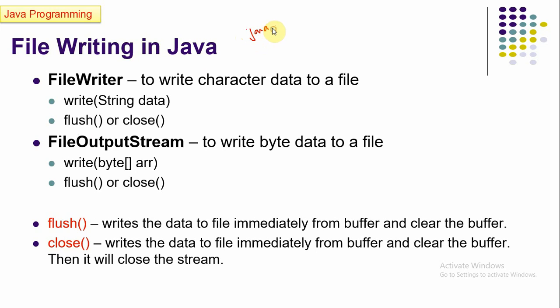Both are stream classes defined in the java.io package, so we need to import that package in our program. Here we are going to talk about only the output stream — writing data to a file. FileWriter is based on a character-oriented stream class, so we can write character data directly to a file with no need to convert characters to bytes.